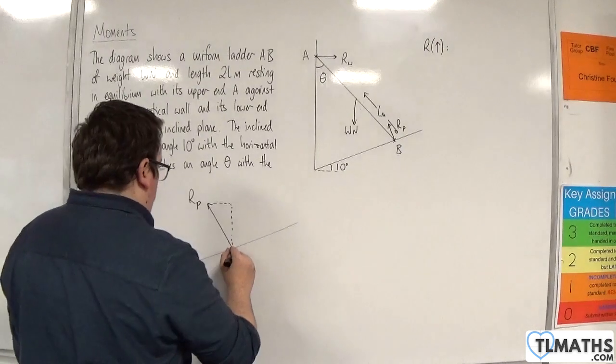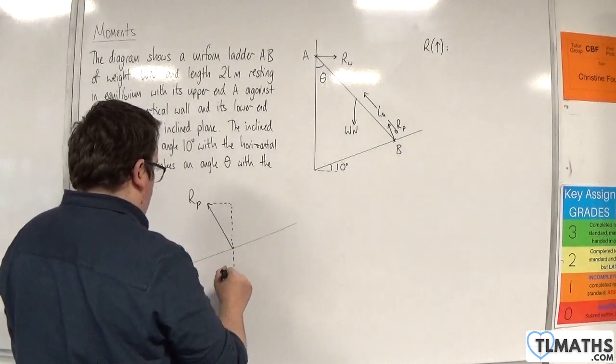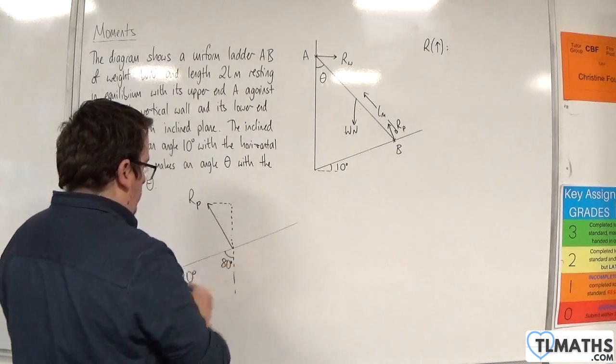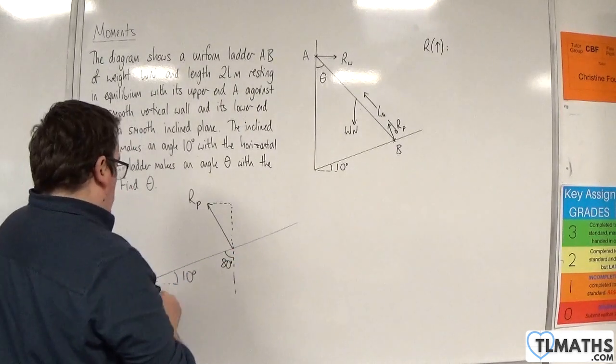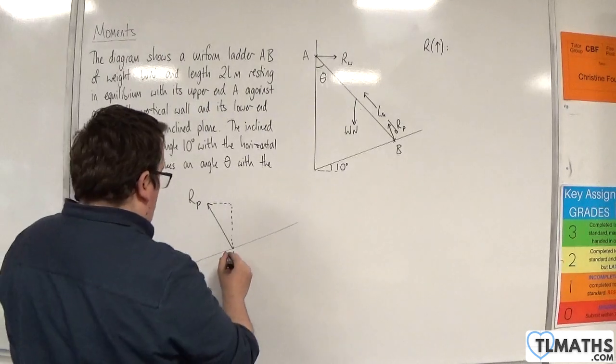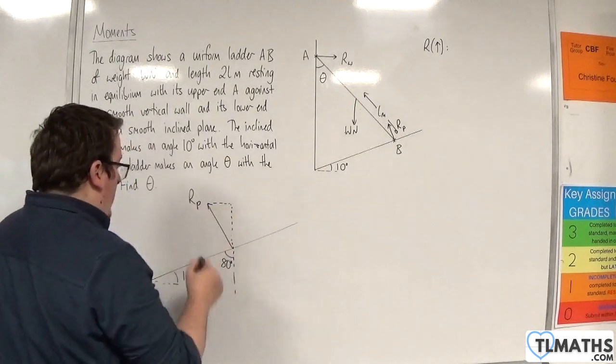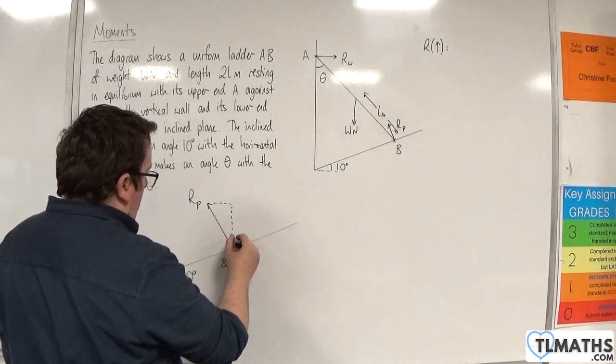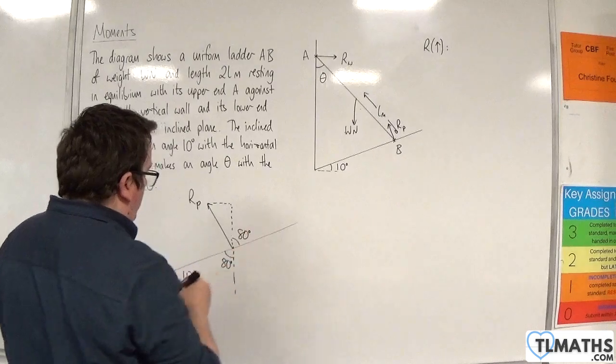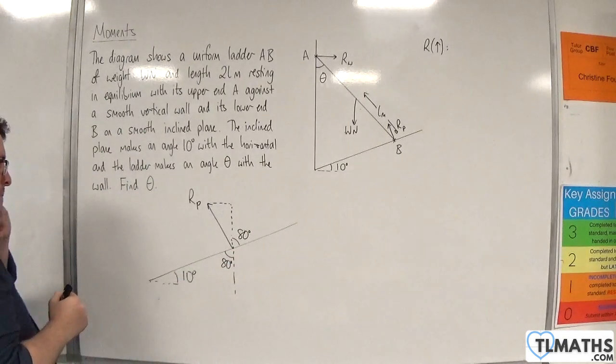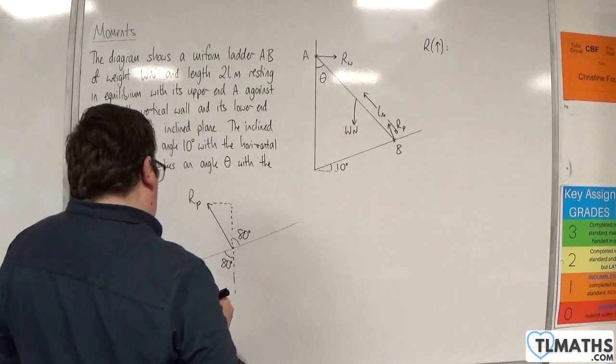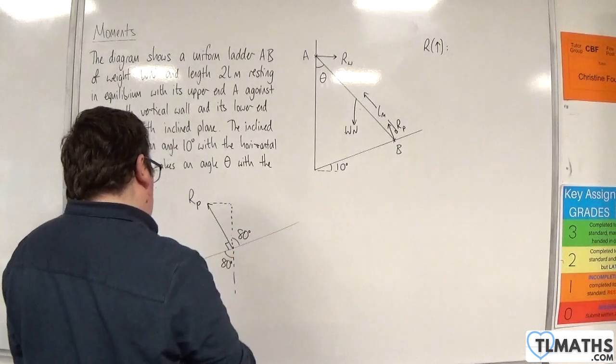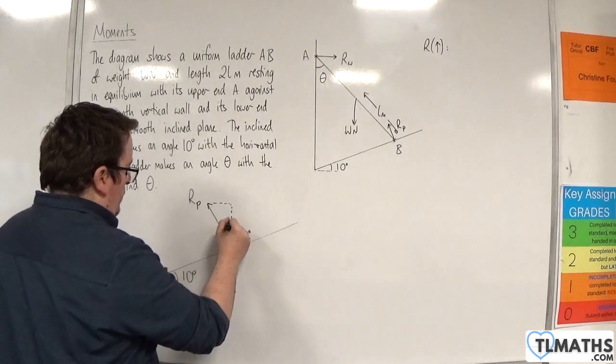Let's continue that down. If that's 10 degrees, that's going to be 80 degrees. So if that's 80 degrees, then this angle here would be 80 degrees, vertically opposite. So, that is 90 degrees, and so that's going to have to be 10 degrees.